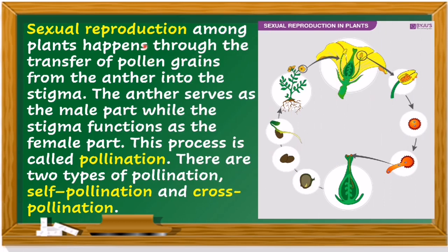Sexual reproduction among plants happens through the transfer of pollen grains from the anther into the stigma. The anther serves as the male part while the stigma functions as the female part. This process is called pollination. There are two types of pollination: self-pollination and cross-pollination.